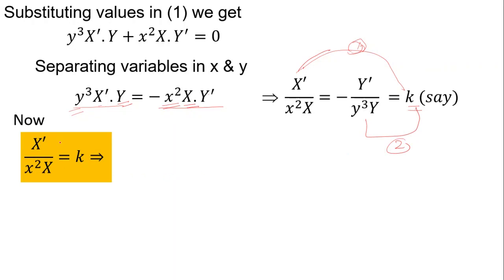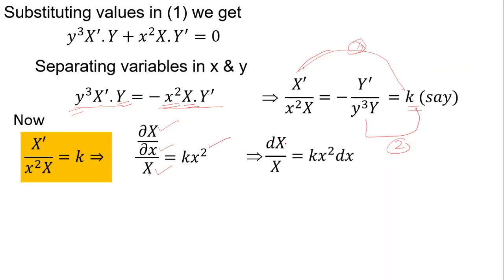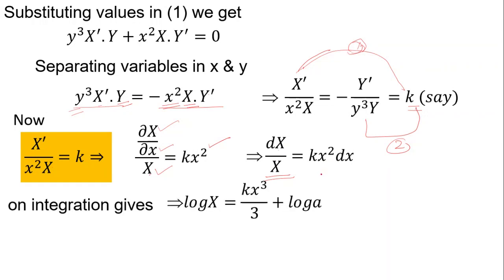From equation one: X'/X = k·x². Replacing X' by dX/dx and multiplying both sides by dx, we get dX/X = k·x²·dx. On integrating, the left side gives log X and the right side gives k·x³/3, plus a constant of integration log a. So log X = k·x³/3 + log a.